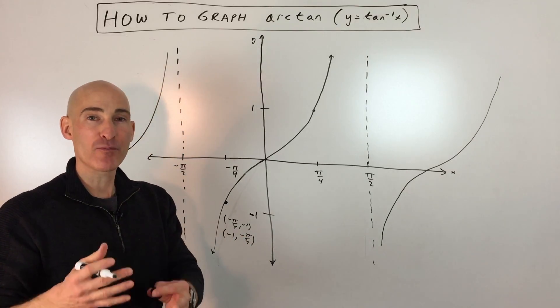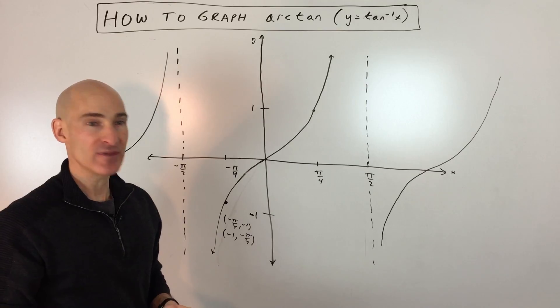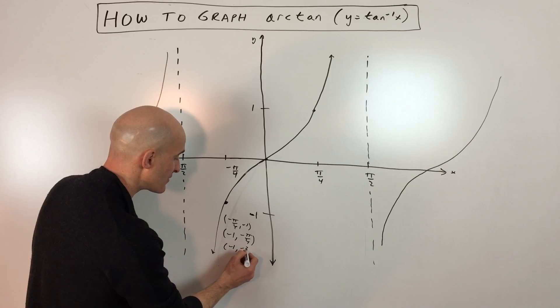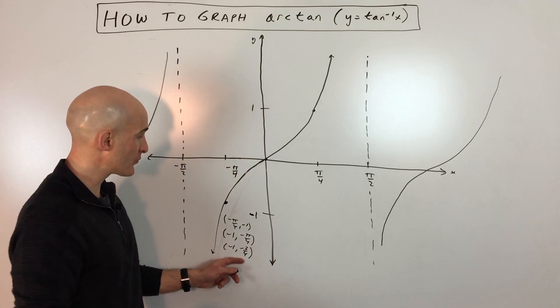Now, pi is approximately 3, right? So that means this is about negative 3 fourths. So I'm just going to approximate this to help us graph it. Negative 1, negative 3 fourths.